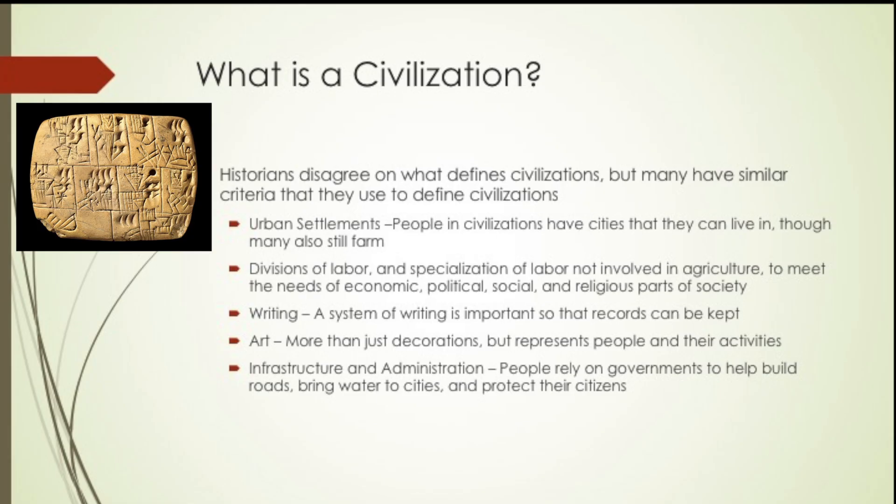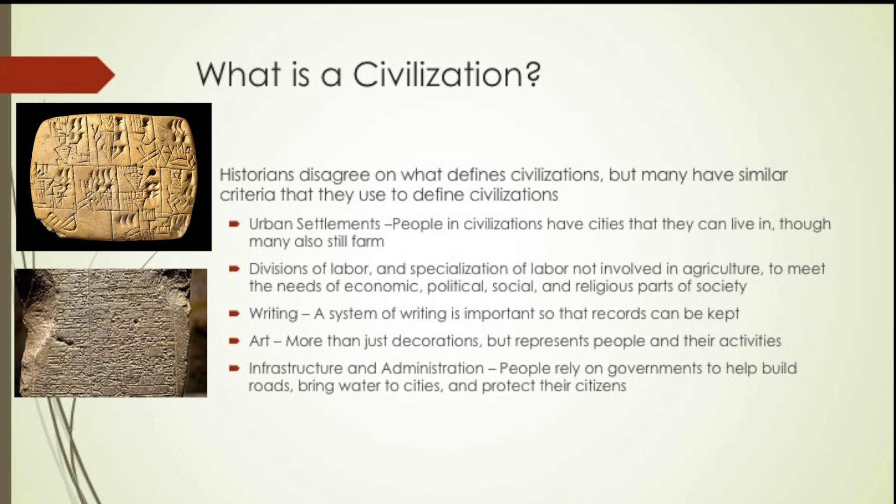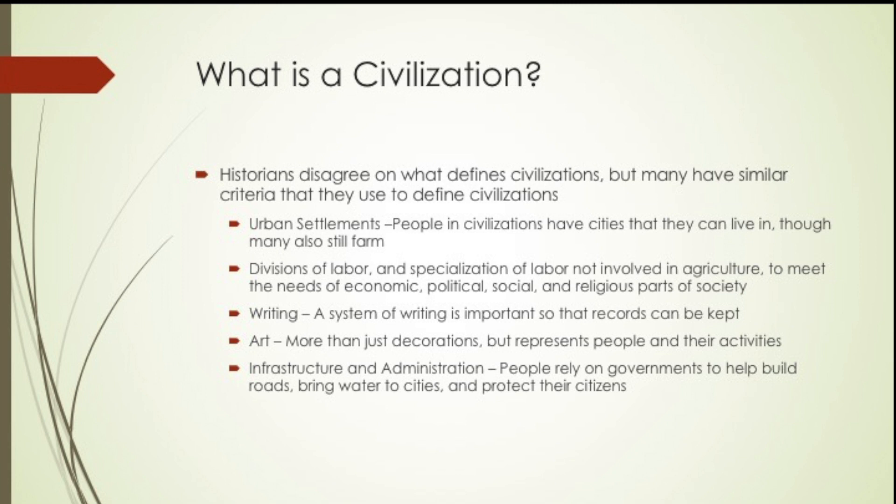The third aspect is a system of writing. Up until this point, there has not been a system of writing — information was just handed down verbally. But when we start talking about Mesopotamia, we see that there is a form of writing that can be used to keep records.